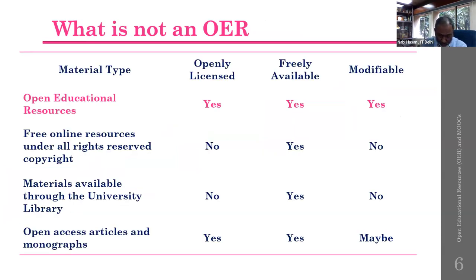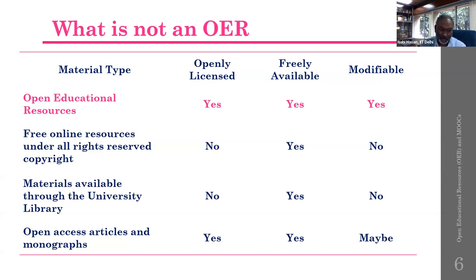To understand what OER is, we need to understand what is NOT an OER. Open Educational Resources are openly licensed, freely available, and modifiable. Free online resources under 'all rights reserved' copyright are sometimes not openly licensed — they could be freely available but not modifiable. Materials available through a university library may not be openly licensed and may not be freely modifiable. Open access articles and monographs don't have 100% freedom like OER.